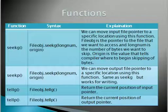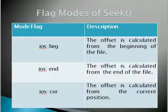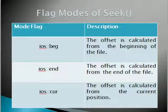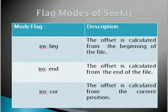Next, we are going to see the flag modes in the seek function. There are three flag modes: ios::beg, ios::end, and ios::cur. ios::beg means the file pointer will go back to the beginning of the file — if you want to go to the beginning of the file, we use ios::beg.